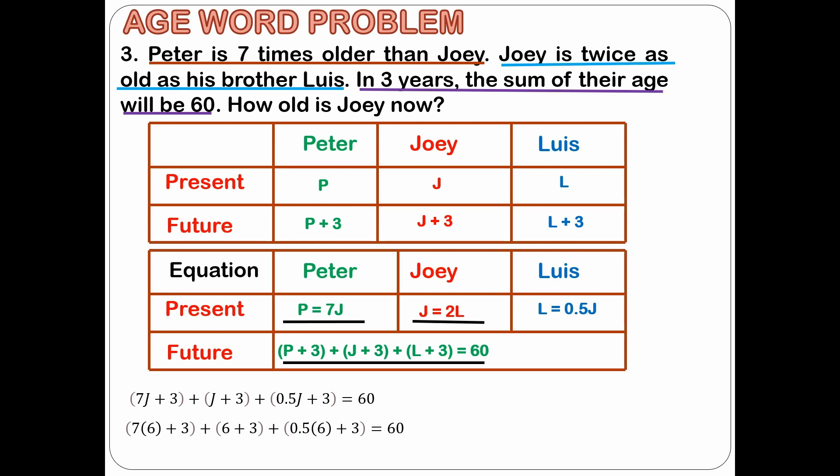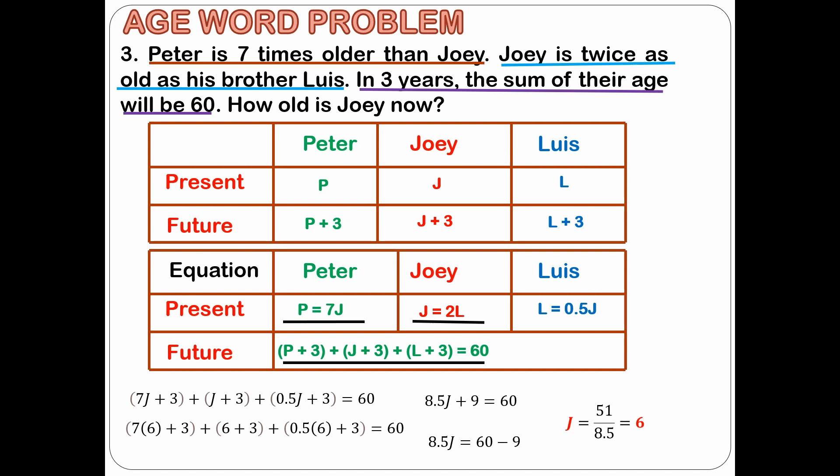Now we're left with only one variable and that is for Joey, which is the variable we want to calculate. After simplifying the equations, we get the age of Joey at present is 6 years old. For the purpose of checking, we will substitute the age of Joey into this equation to see if the left and right sides are equal, or we will get 60 on both sides. After substituting, we get 60 on both sides, and we can say that Joey's age is really 6 years old. If you want to know the age of Peter, just plug in the age of Joey into this equation. Likewise, if you want to know the age of Luis, just plug in the age of Joey into this equation.